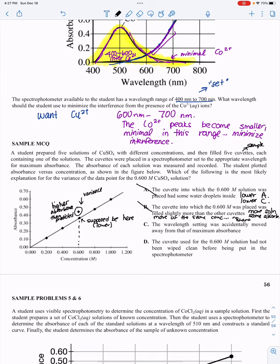C: The wavelength setting was accidentally moved away from maximum absorbance. If it was moved away from maximum, it would minimize the absorbance and give me lower absorbance. So it can't be C. We're left with D, our correct answer. The cuvette had not been wiped clean before being put in the spectrophotometer. Fingerprints will increase the concentration, like I said before. D is our correct answer for sure.